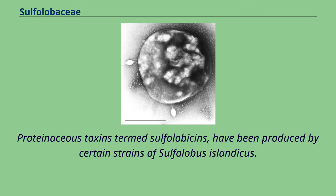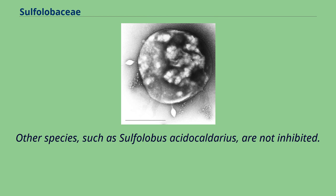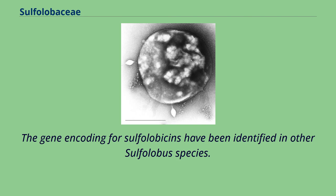Proteinaceous toxins termed sulpholobisins have been produced by certain strains of Sulpholobus islandicus. These toxins may provide a competitive advantage, as they inhibit the growth of non-toxin-producing strains of S. islandicus and certain other Sulpholobus species. Other species, such as Sulpholobus acidocaldarius, are not inhibited. The genes encoding for sulpholobisins have been identified in other Sulpholobus species.